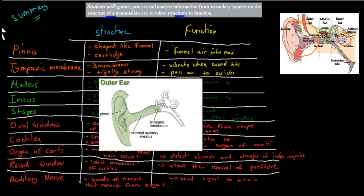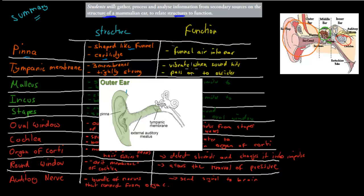The outer ear consisted of the pinna, which was this funnel-shaped part here. It was shaped like a funnel to make sure that all the sound can enter the center of the ear. It was made of cartilage — cartilage is a bony structure but it's not bone, it's a bit more flexible, and that's because the ear has to be flexible. So its structure is funnel-shaped cartilage, and we were meant to relate structure to function. Its function was to funnel sound into the ear, which is why it had that kind of structure, and also its function was to protect the ear, which is why it has its cartilage around it.